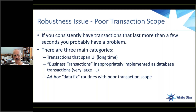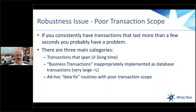The first is transactions that span over a user interface — that is, they run for a long time. A user is doing things, maybe not doing much; they might've just gone to lunch, but there's a transaction active while they're sitting on that screen. Then there are business transactions that have been inappropriately implemented as a database transaction — for example, a process that does a big purge that somebody decided should be done as a single database transaction.